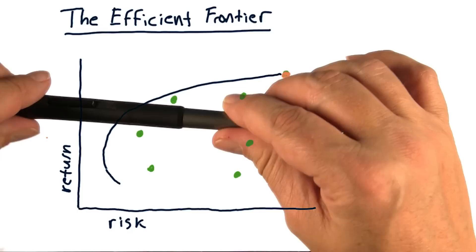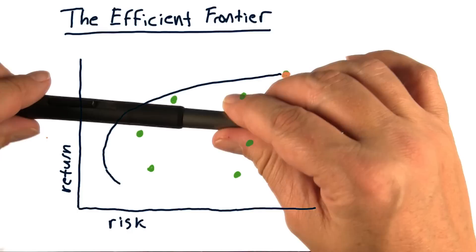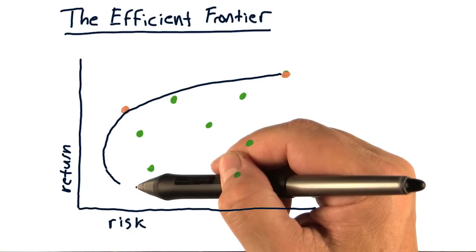A couple different things to observe that are interesting. One is, as you reduce the return, sometimes this curve comes back in this direction, indicating that the risk is actually increasing as we reduce the return.